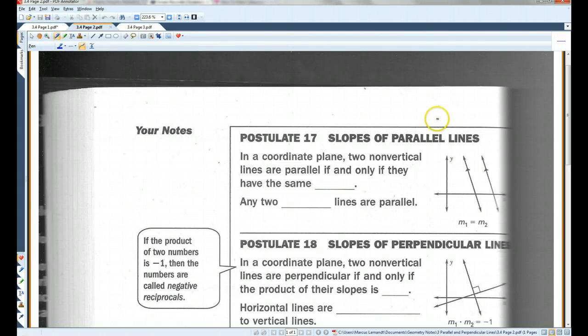Postulate seven. In a coordinate plane, two non-vertical lines are parallel if and only if they have the same slope. Also, any two vertical lines are parallel.